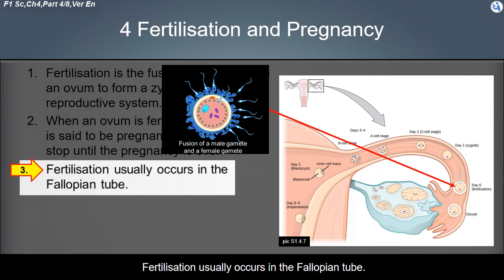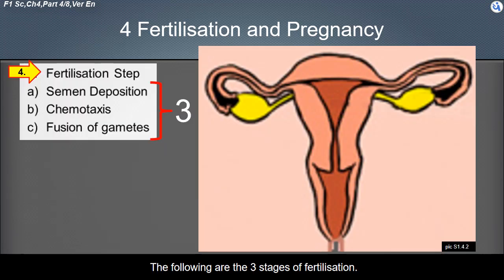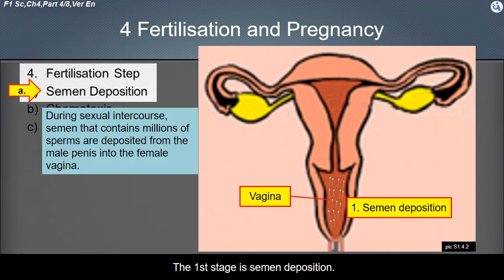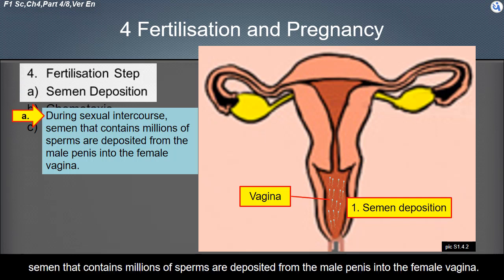Fertilization usually occurs in the fallopian tube. The following are the three stages of fertilization. The first stage is semen deposition. During sexual intercourse, semen that contains millions of sperms are deposited from the male penis into the female vagina.